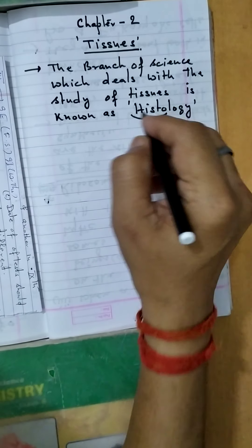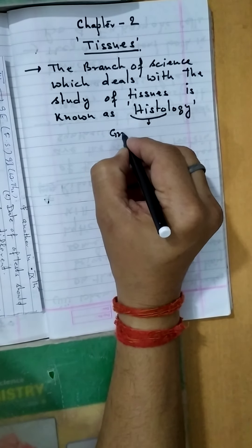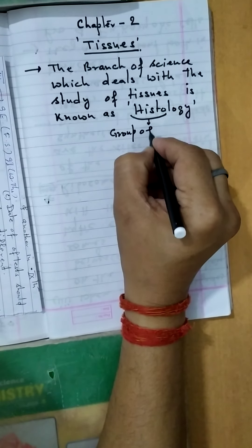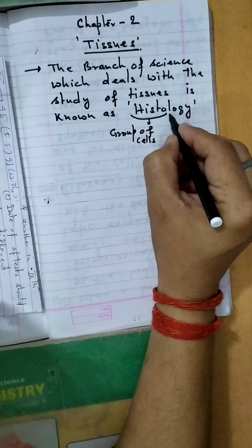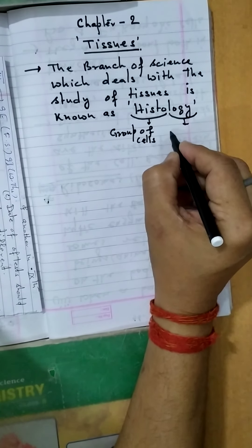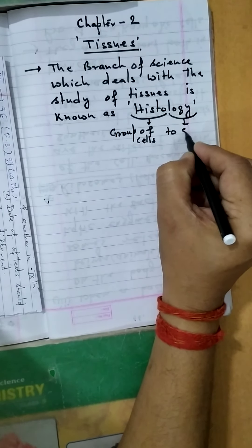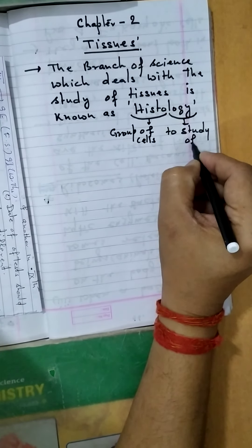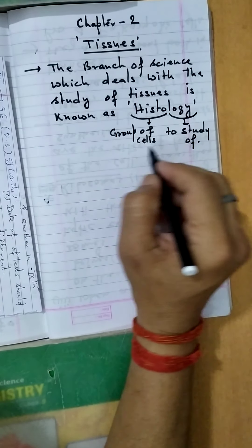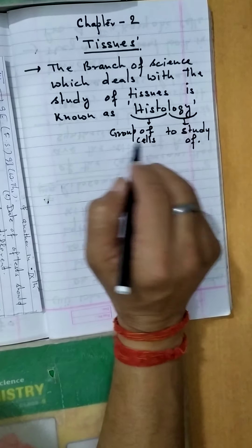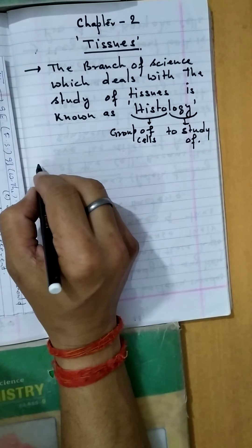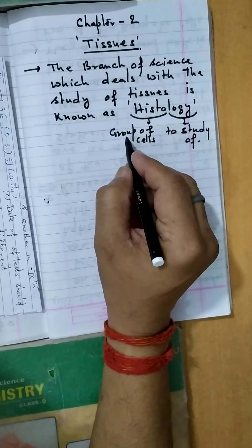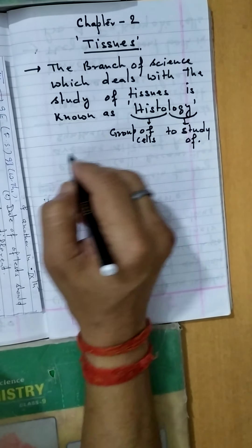Histo means group of cells, and logy means to study of. So to study of the group of cells is known as histology. Now group of cells means tissues.